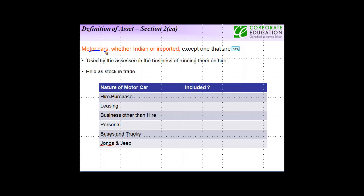Motor cars are included within the definition of assets. These could be Indian or imported. When we say motor cars, heavy duty vehicles are excluded. And what is also excluded are the following two categories. One, where the assessee uses them in the business of running them on hire. And second, when these are held as stock in trade by the assessee.